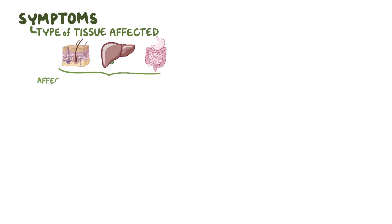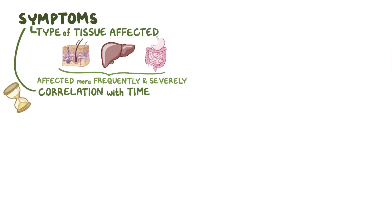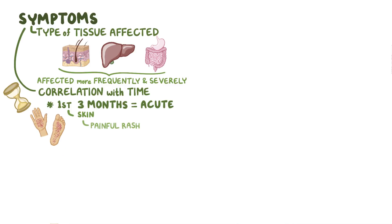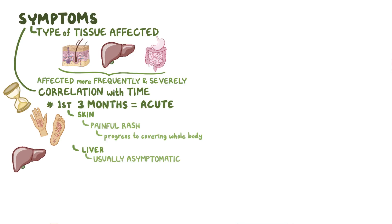The symptoms of graft-versus-host disease can vary wildly depending on the type of tissues affected. It's not known why some types of tissues — usually the skin, liver, and the digestive tract — are affected more frequently and more severely than others, or why there is a correlation with time after transplant. In the first three months following transplantation, there's the acute form of the disease, which typically involves the skin, causing a painful, itchy rash on the palms of the hands or soles of the feet that can peel or blister and progress to covering the whole body. After the skin, the next most common target is the liver, where the disease is usually asymptomatic but leads to an elevation in bilirubin, alkaline phosphatase, and aminotransferases like ALT and AST.